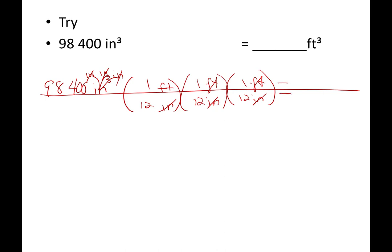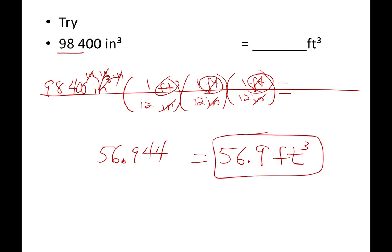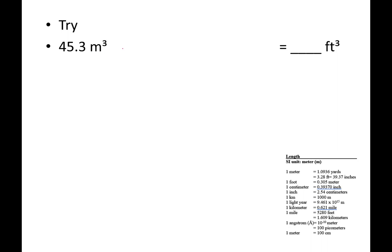When I pick up my calculator, I end up with 56.944, and that's a decimal. I started with three significant digits. Round this off to three sig figs: 56.9 feet times feet times, cubic feet. There we go. All right, let's try another one. Cubic meters to cubic feet. Give this a try.